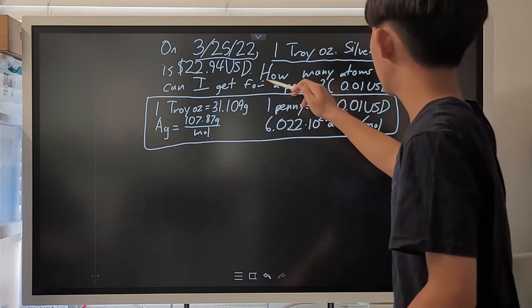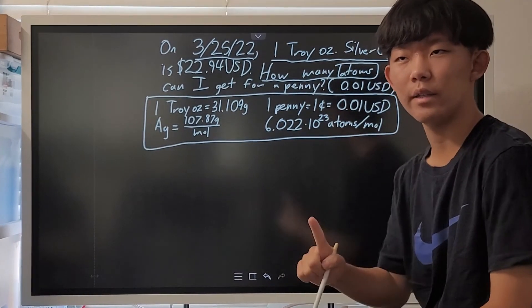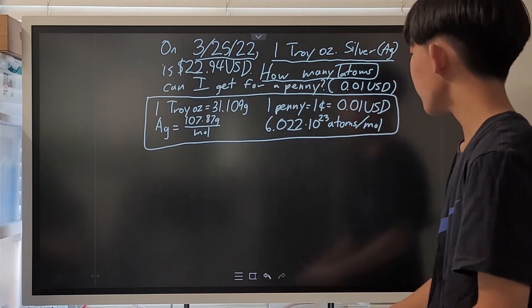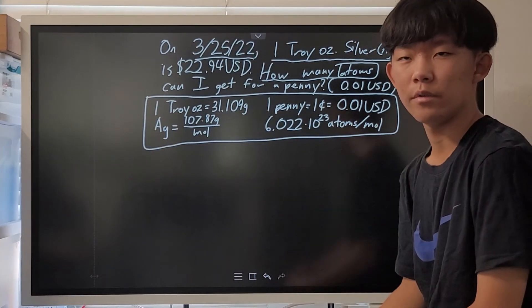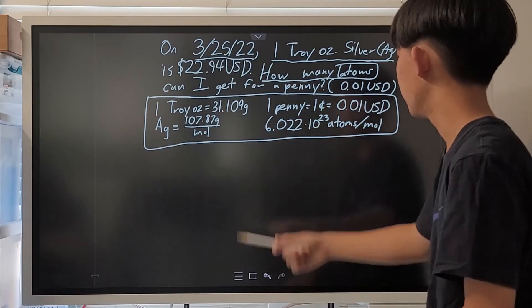The question is, how many atoms can I buy for 1 penny? That is, 0.01 USD or 1 cent. I put a bunch of these conversion factors here for more information. Honestly, this is all the information that we need.